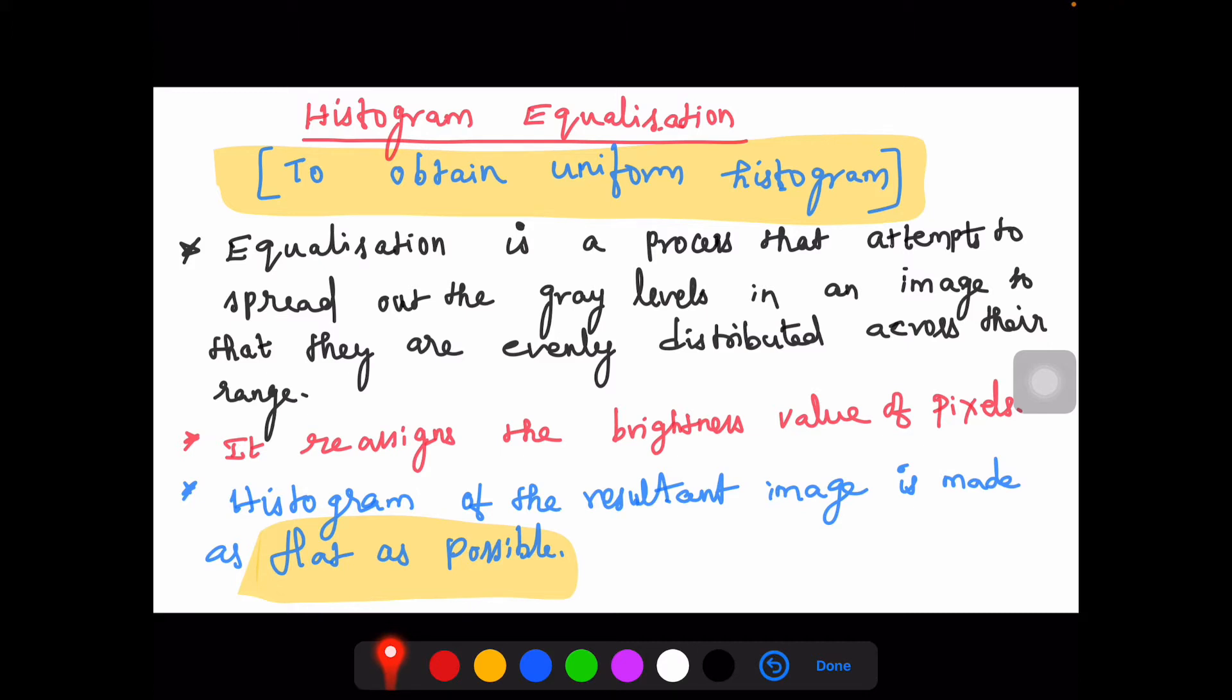Actually it reassigns the brightness value of the pixels, which means that when we plot the histogram, we will try to ensure that it is as flat as possible.